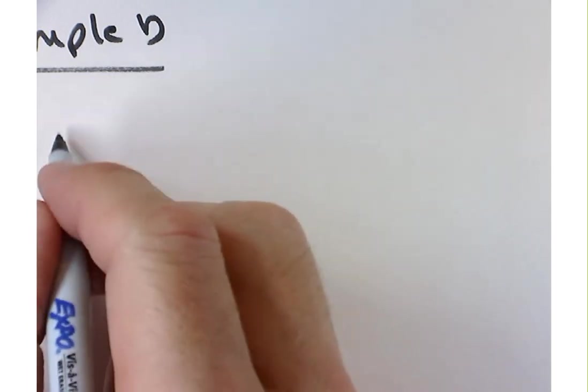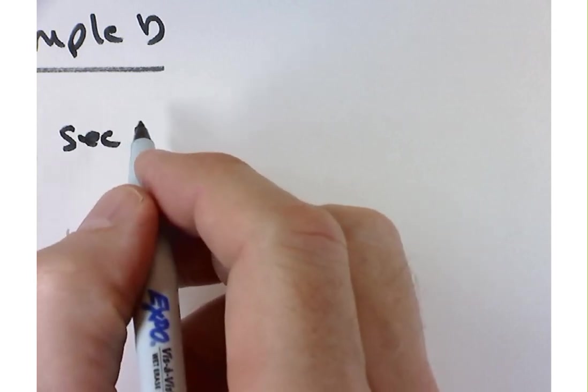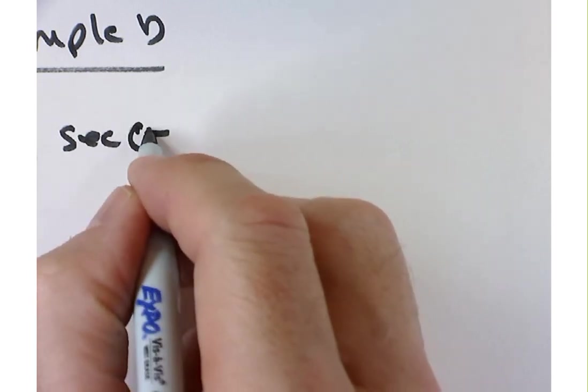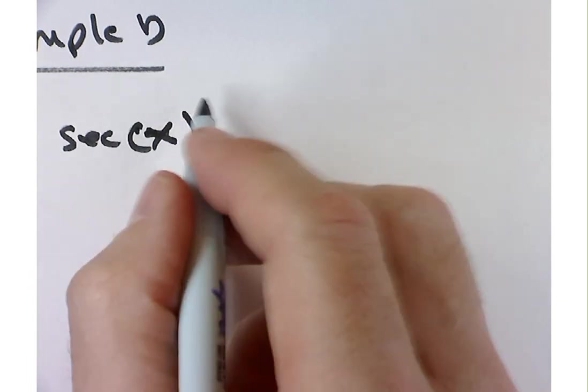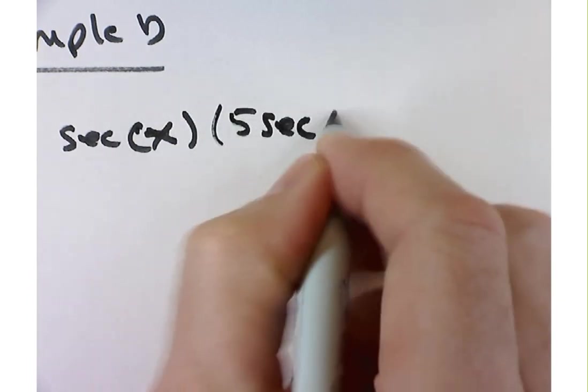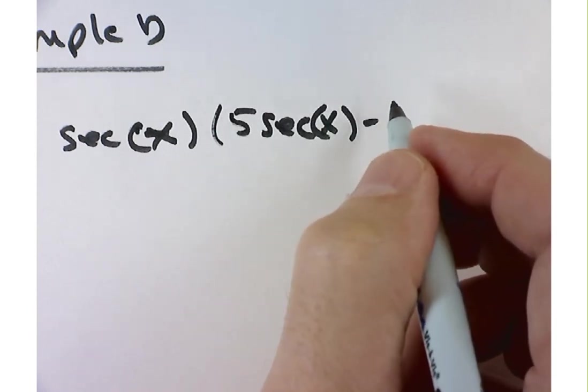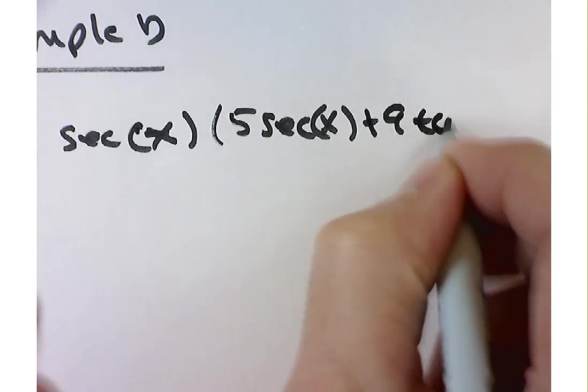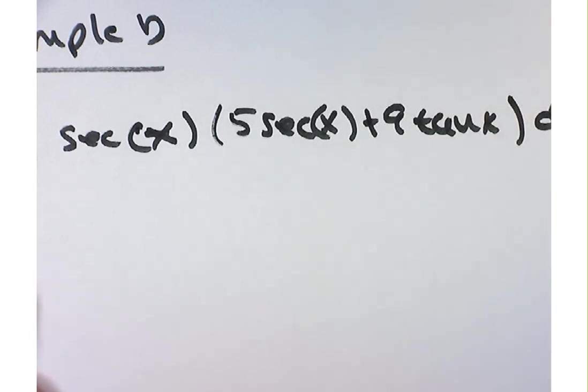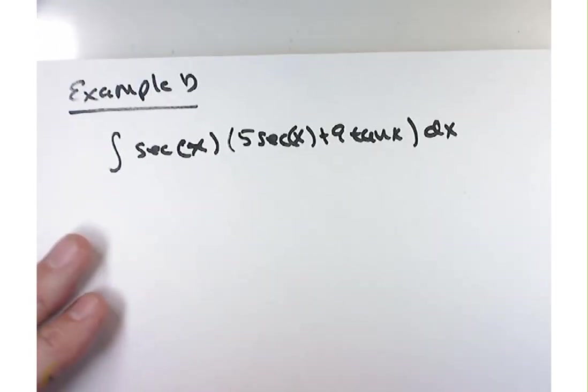All right. Let's take a look at example D here. So this is really cool because you guys get to revisit all your rules for differentiation except in an opposite order. So I've got the integral of the secant of x. Actually, I think it's t, but I'm going to write it with an x because t's get kind of messy. secant of x times 5 times the secant of x plus 9 times the tangent of x dx.